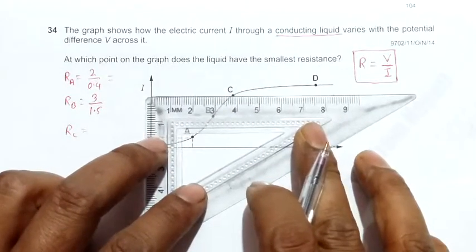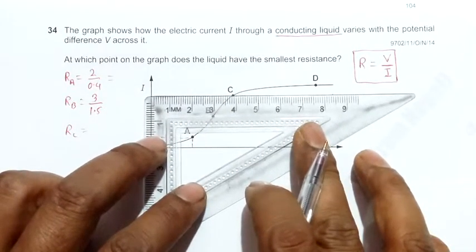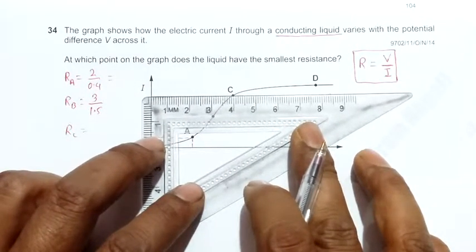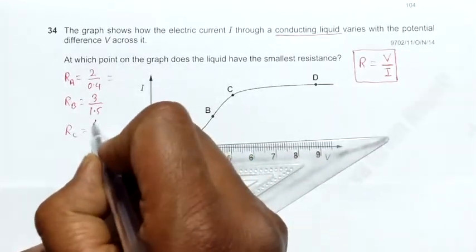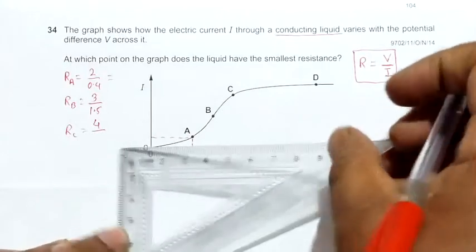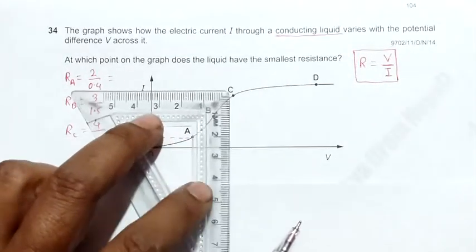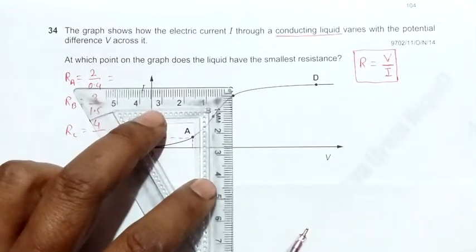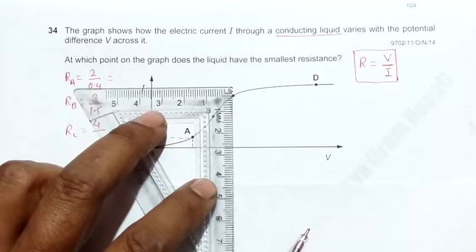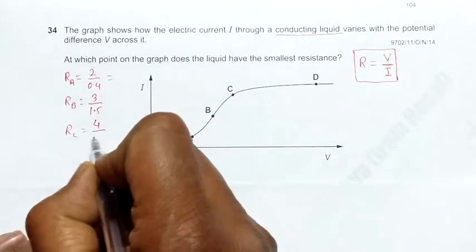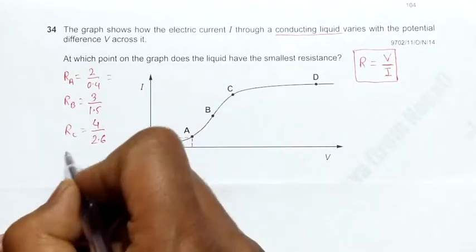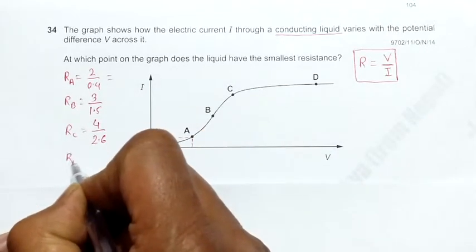R_C will be equal to—if you take this measurement, it will be around 4 centimeters, and this measurement will be around 2.6 centimeters.